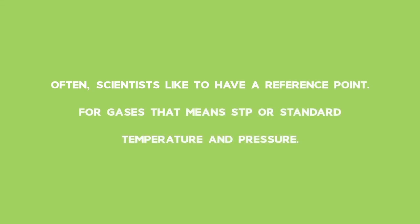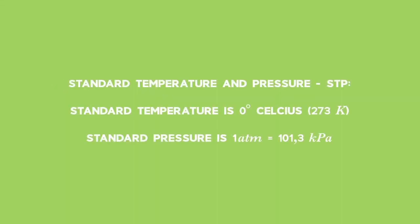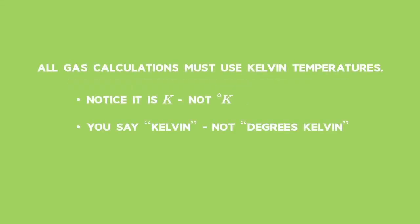Often scientists like to have a reference point. For gases, that means STP or standard temperature and pressure. Standard temperature is zero Celsius or 273 Kelvin. All gas calculations must use Kelvin temperatures. Notice it is K, not degrees K. You say Kelvins, not degrees Kelvins.